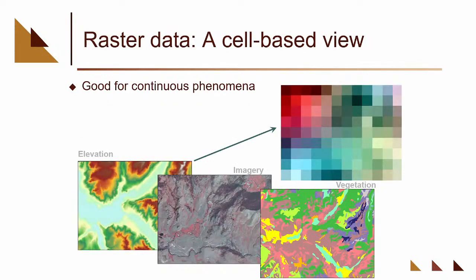Raster is great for continuous data, like elevation. Elevation doesn't have a line going through it — your land just moves up and down very continuously, unless you're at a cliff. Continuous data is where raster works out really well. You can see aerial satellite imagery and elevation data. Vegetation has been generated out of satellite imagery, so it's raster — but vegetation can be discrete as well. You could have a forest that becomes farmland, which is a very discrete boundary. So vegetation could go either way.